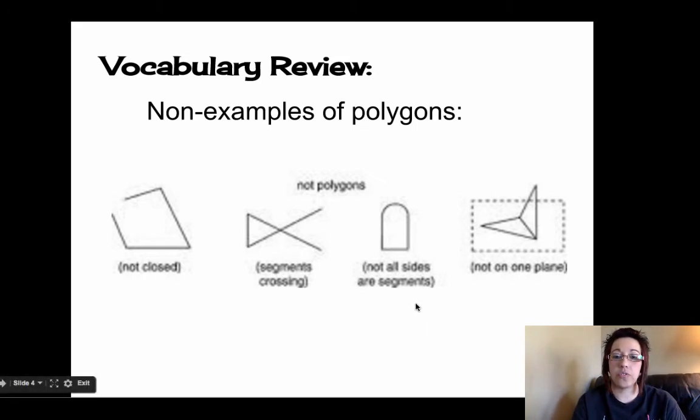This third figure here, notice that it comes around with this arc on the end. That is definitely not a line segment. So this figure is not a polygon. When you look at the plane right here, this figure is made up of line segments, but it is not entirely on the plane. That would mean it is not a polygon.